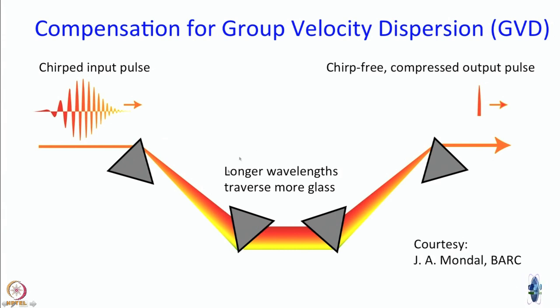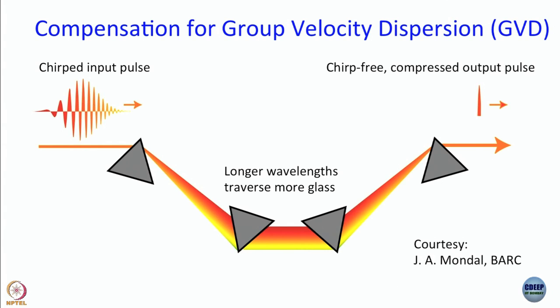This compensation is done quite easily using prism pairs — one prism pair is sufficient. The job of the prisms is to compensate for what is called group velocity dispersion (GVD): the separation in time of different frequencies due to different velocities in a medium with a finite refractive index.